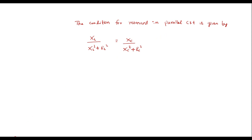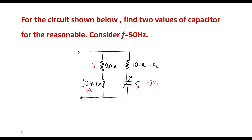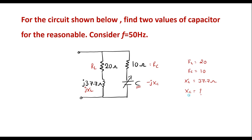Here we can observe that the value of RL is equal to 20, RC is equal to 10, and XL is 37.7 ohm — that is the inductive reactance. The capacitive reactance we do not know, so first we have to calculate the value of XC.